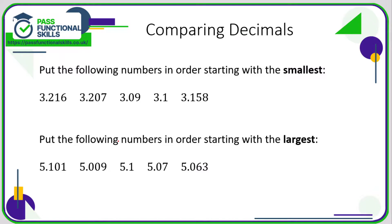Let's take a look at comparing decimals. Here we want to start with the smallest number. Now we can see that they all begin with a three, so we're going to have to look at the value of the tenths column. We've got a two, two, zero, one, and a one. Clearly zero is less than one and two, so this is going to be the smallest number: three point zero nine.